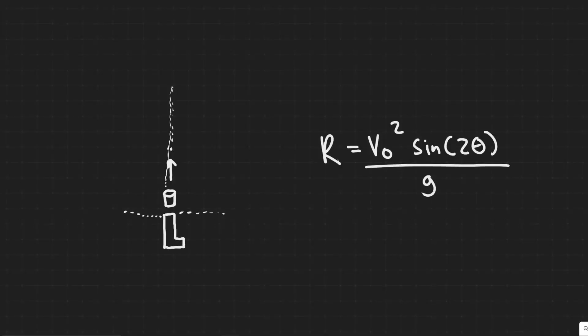Okay, so in this problem we're told you buy a plastic dart gun, and being a clever physics student, you decide to do a quick calculation to find its maximum horizontal range. You shoot the gun straight up, and it takes 4 seconds for the dart to land back at the barrel. What is the maximum horizontal range of your gun?